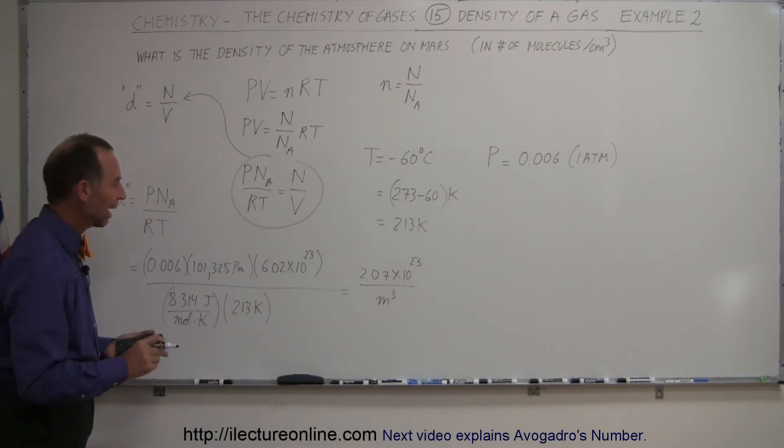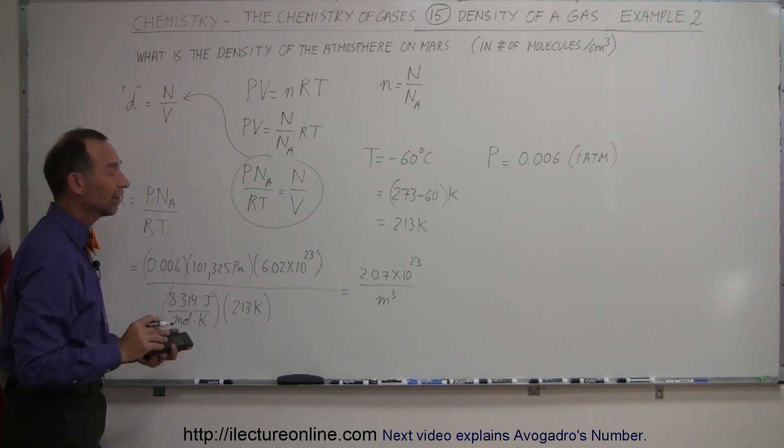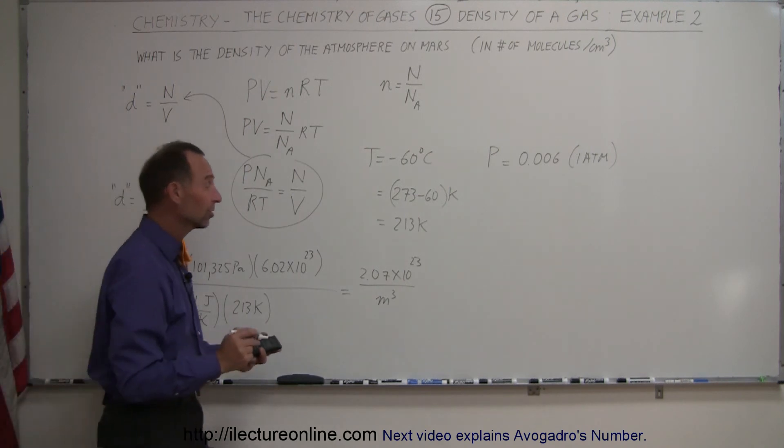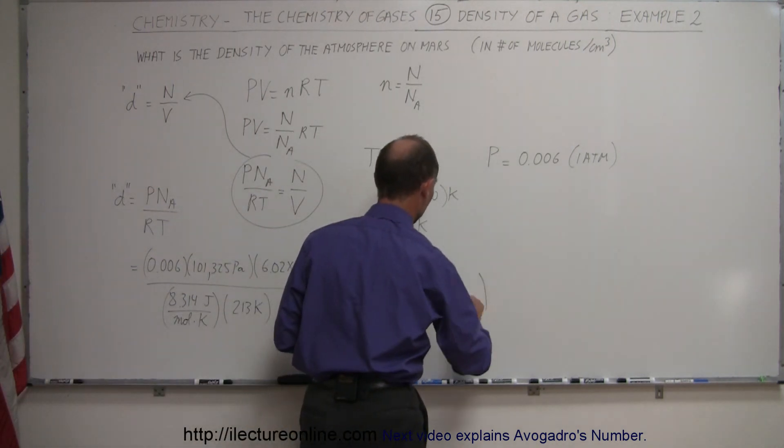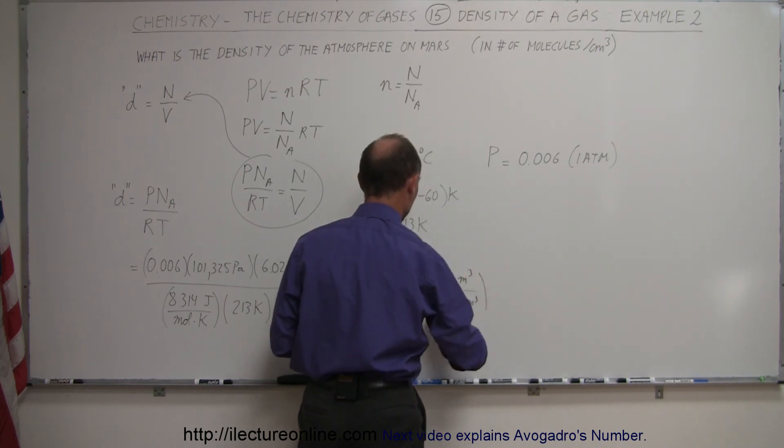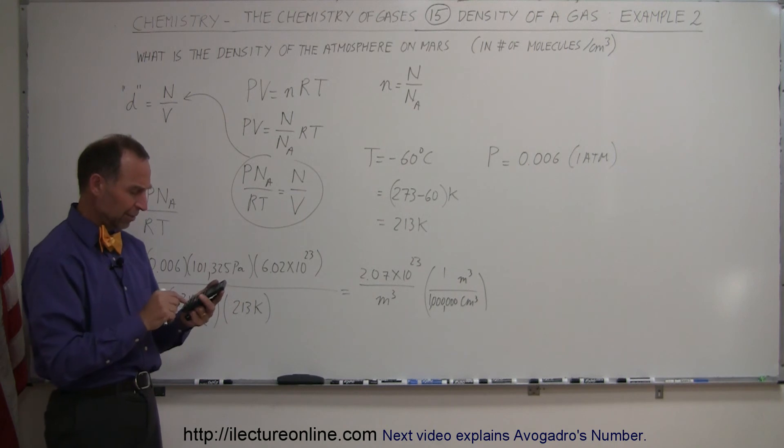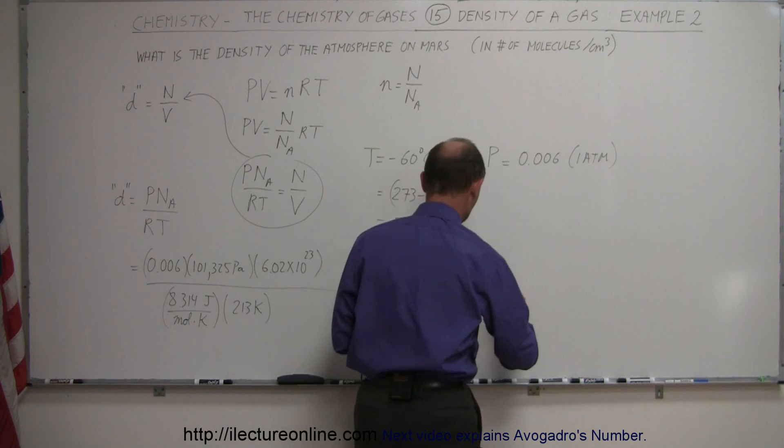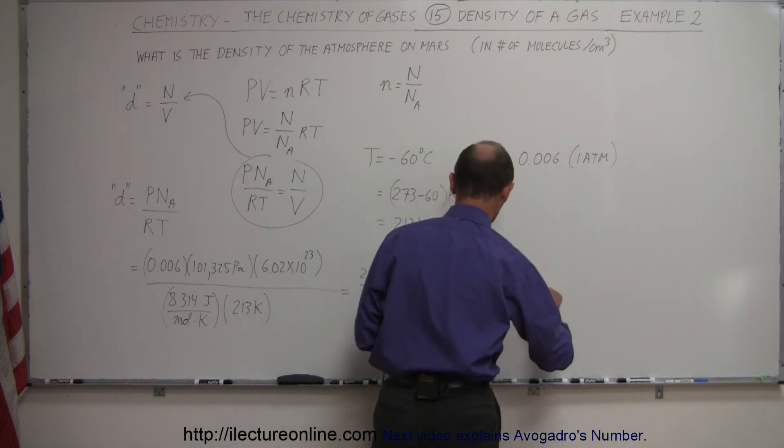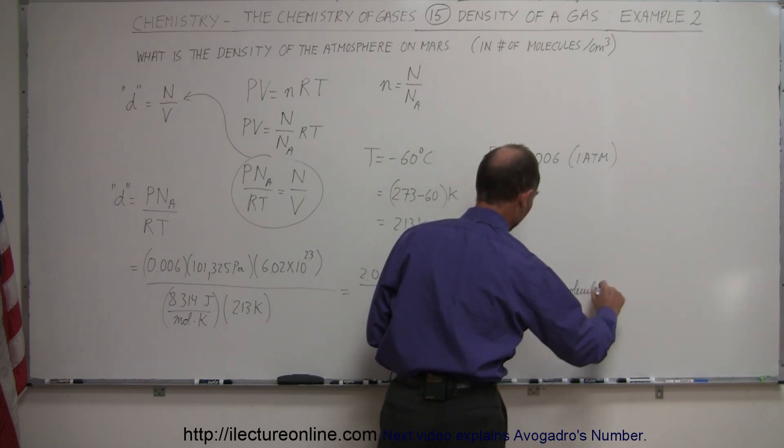So we have molecules per standard volume of cubic meters. If we want to convert that to cubic centimeters, we have to use a conversion factor. Cubic centimeters at the bottom, cubic meters at the top. One cubic meter is 1 million cubic centimeters, which means we take that, divide by 1 million, and we get 2.07 times 10 to the 17th molecules per cubic centimeter.